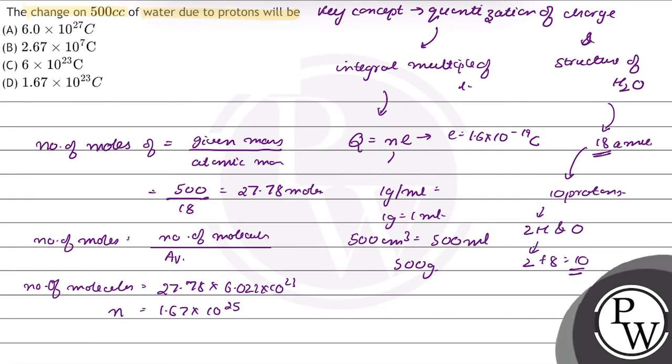The value of N is equal to 1.67 into 10 raised to power 25. Now, the total charge Q is equal to 1.67 into 10 raised to power 25 into charge on each proton that is 1.6 into 10 raised to power minus 19 coulombs.